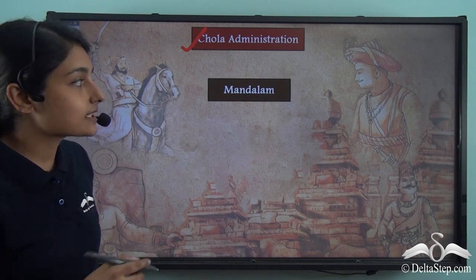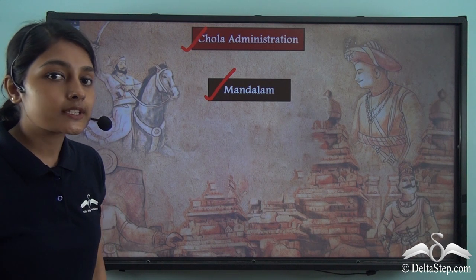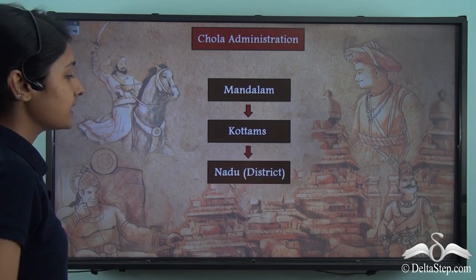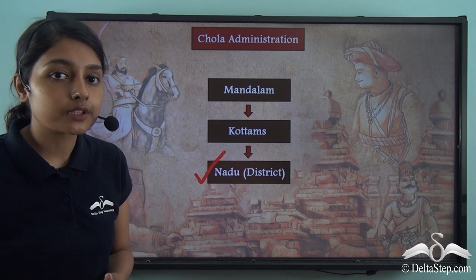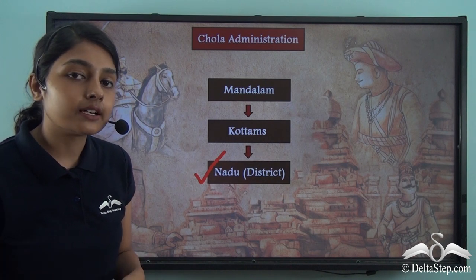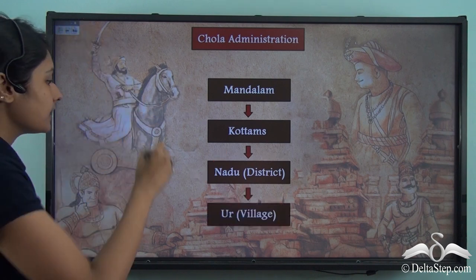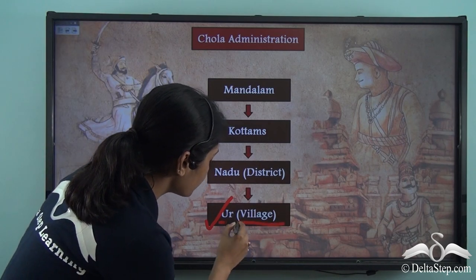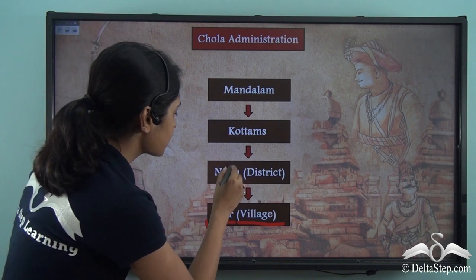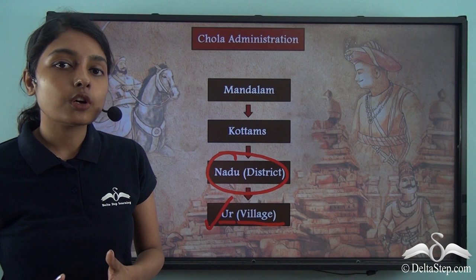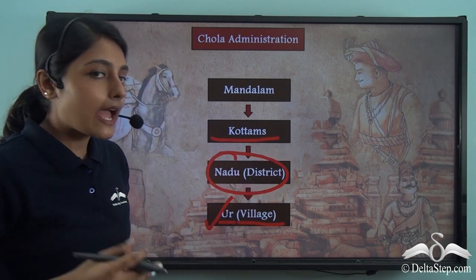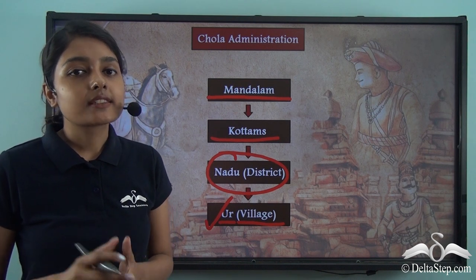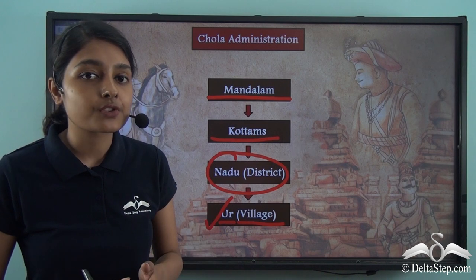The Chola administration was firstly divided into Mandalam, and this Mandalam was further subdivided into Kottams. Kottams were again divided into Nadu, which were the districts during the Chola Empire. These districts were further divided into the last category — villages or Ur. Many villages or Ur together comprised Nadu or district, and Nadu had above it Kottams, and above Kottams came Mandalam. This was how the Chola administration was stratified, and it was very important for the proper administration of the empire.